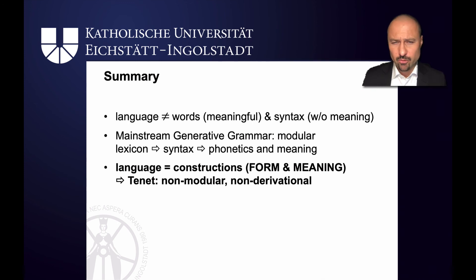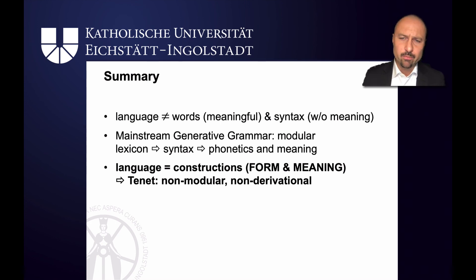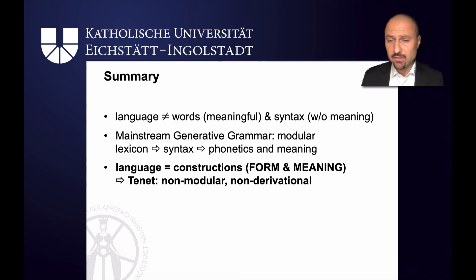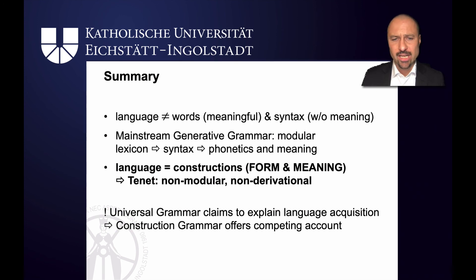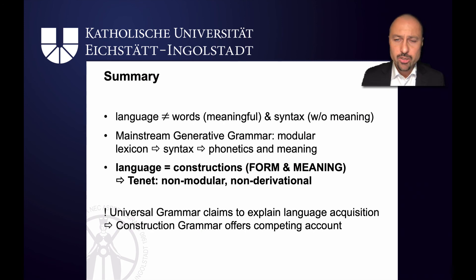In my lecture on cognitive linguistics, I discuss in much more detail the kind of evidence that generative grammarians have put forward in defence of their theory, and discuss it more critically — so feel free to check out the videos in the cognitive linguistics lecture series. For now, all I can say is that universal grammar claims to explain language acquisition, and that's something that construction grammar must also do. Construction grammar must offer a competing account of how full form-meaning pairings are actually the starting base of language acquisition, and later on in this course I will flesh this out in more detail with empirical evidence.